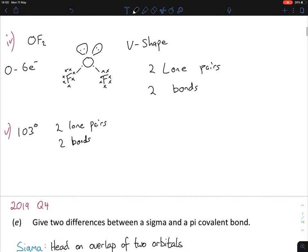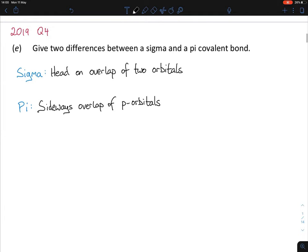Let's move on to 2019 question four. You're asked to give two differences between sigma and pi covalent bonds. Well, you learned this off - that's it. Sigma is head-on overlap of two orbitals, and pi is a sideways overlap of p orbitals. There actually is two differences there. The first difference is the head-on and the sideways overlap. The second difference is two orbitals over here or p orbitals over here. So there is two differences for that. Learn it off, guys - you can use those as your definitions as well.